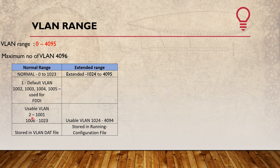The usable normal range VLANs are 2 to 1001. VLANs 1006 to 1023 are also in normal range. Normal range VLAN configurations are saved in the VLAN database file (vlan.dat). The extended range is 1024 to 4094, and these configurations are saved in the running configuration.